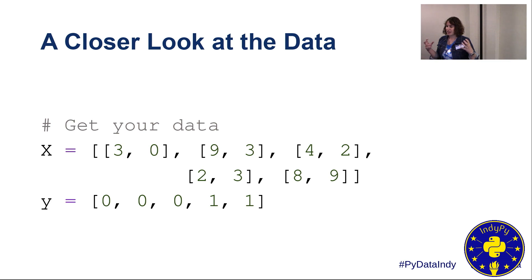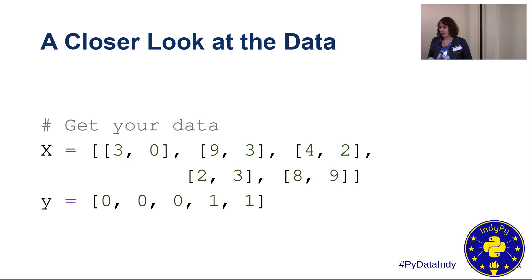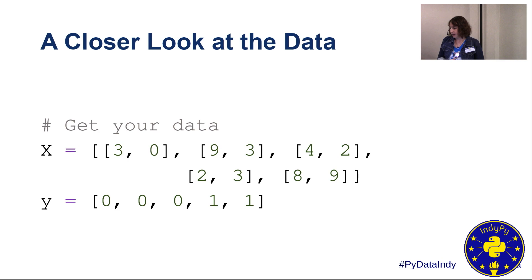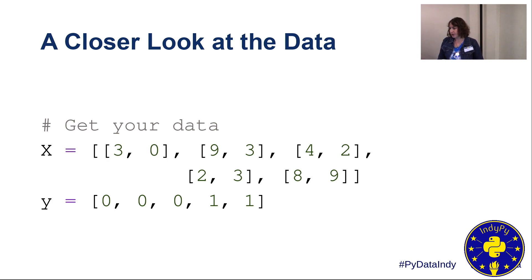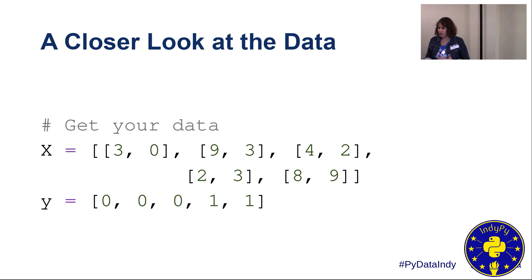Before moving on, let's talk about this example data and show some problems I've mentioned. We have five examples. The first three have a larger first number and belong in category zero. The last two have a larger second number and belong in category one. The labels look like categories, so we'd probably use classification. But there are problems with this data: there are obviously too few examples — a ballpark number is about 50 minimum. We've also got some missing cases, like what should the system do if the numbers are equal? And our goal is unclear — does a label of one mean the second number is larger, or that the numbers are sequential?